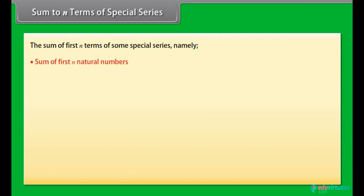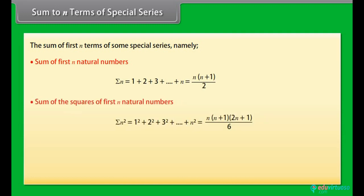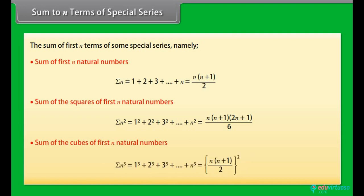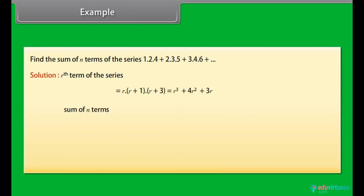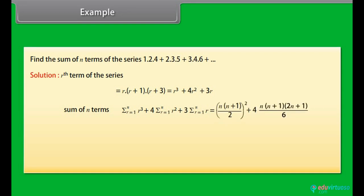Sum to N terms of special series: The sum of the first N natural numbers, the sum of the squares of the first N natural numbers, and the sum of the cubes of the first N natural numbers. Example: The Rth term of the series equals a specific expression. Sum of N terms = Σ(R³) + 4×Σ(R²) + 3×Σ(R), which on solving gives n(n+1)/12 × (3n² + 19n + 26).